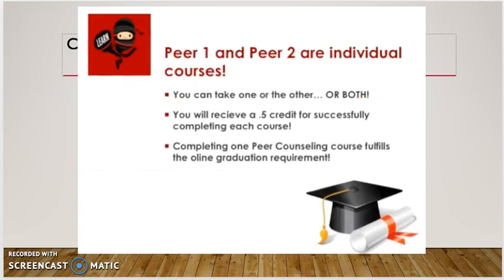Peer Counseling 1 and Peer Counseling 2 are individual courses, so you have options. You can take one of these courses or the other, or you can take both. For each course you will receive a half credit for successfully completing it. Also keep in mind that completing only one of your peer counseling courses will fulfill the online graduation requirement.